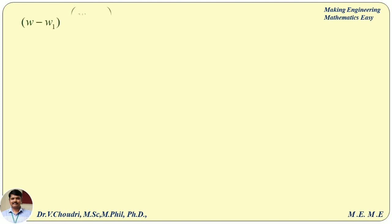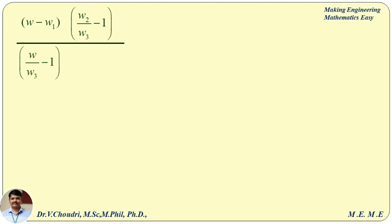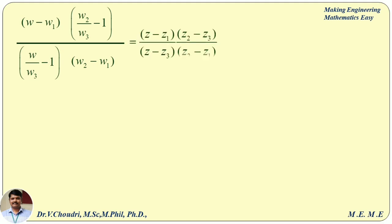After canceling w3 from numerator and denominator, it becomes: (w minus w1) times (w2/w3 minus 1) divided by (w/w3 minus 1) times (w2 minus w1). Now we are going to substitute the values: w1 equal to i, w2 equal to 0, w3 equal to infinity, and z1 equal to 0, z2 equal to minus 1, z3 equal to i.